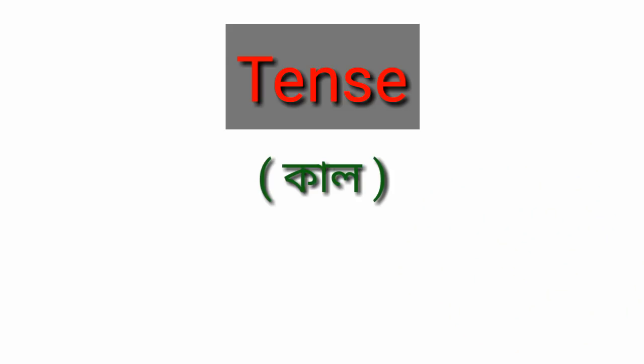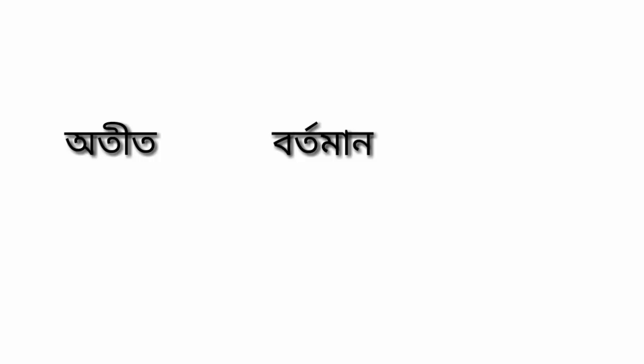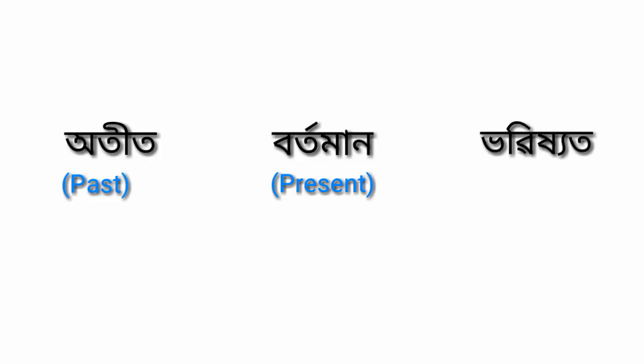Our role in English is tense. There are three main tenses: present, past, and future. The work is expressed in present and future tense.